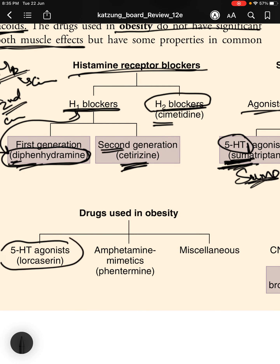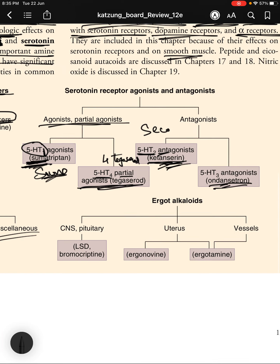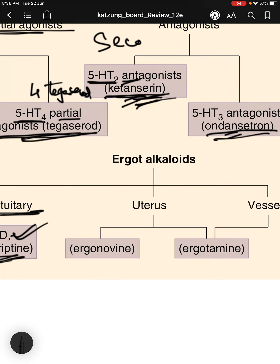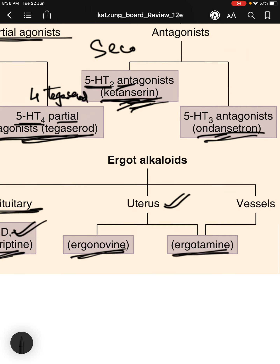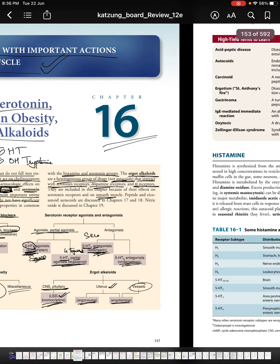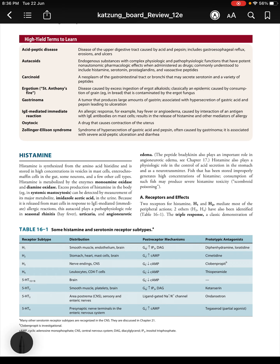For drugs used in obesity, we have 5-HT agonists such as lorcaserin, amphetamine mimetics such as phentermine, and other miscellaneous drugs. Ergoalkaloids are a heterogeneous group of compounds: CNS and pituitary-acting ones include LSD and bromocriptine; those acting on the uterus include ergonovine and ergotamine; ergotamine also acts on blood vessels.